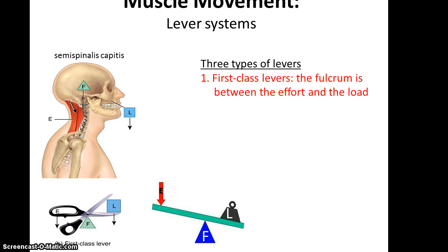There are three types of levers. In first-class levers, the fulcrum is between the effort and the load — examples include the seesaw and scissors. In the human body, an example of a first-class lever is using the muscle semispinalis capitis to move the head back and forth, with the head being the load, the occipital-atlantal joint being the fulcrum, and the muscle being the effort.